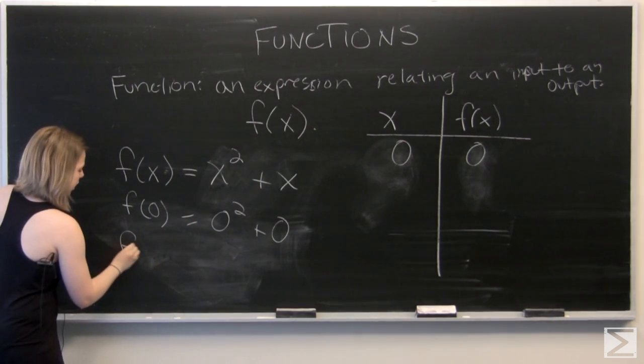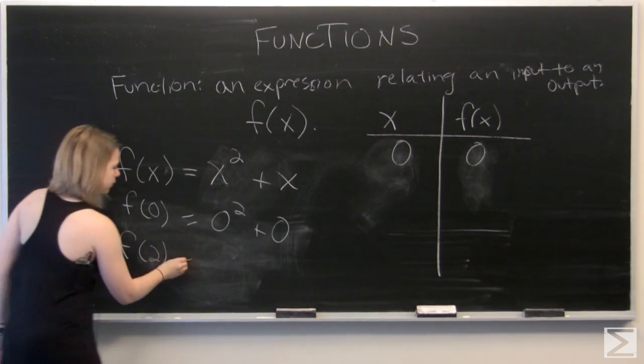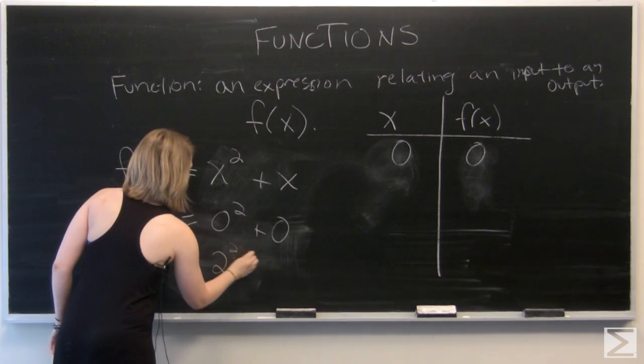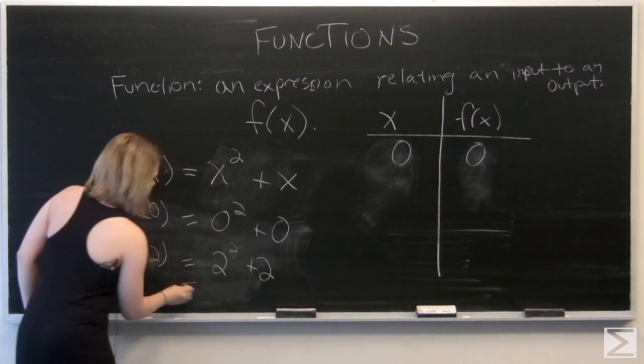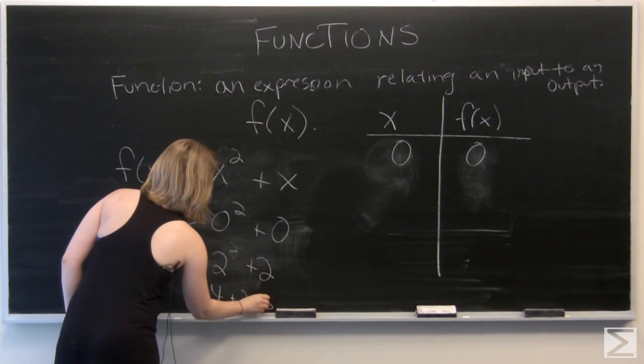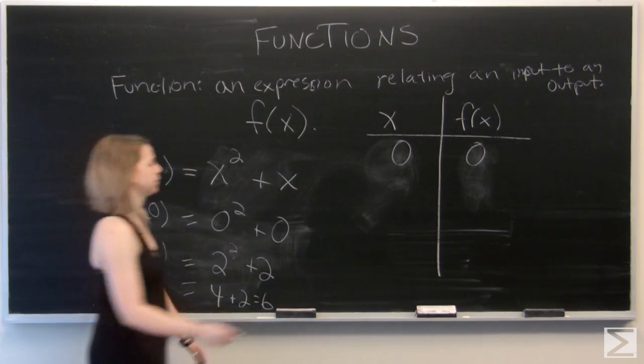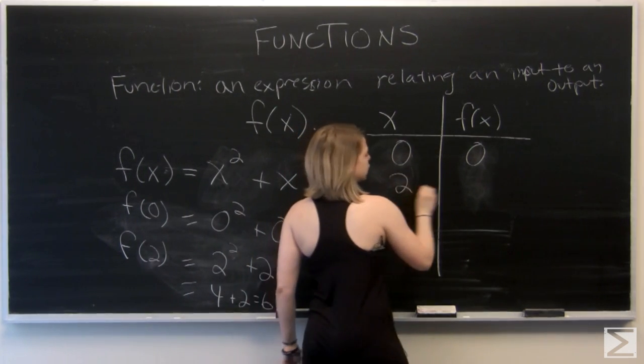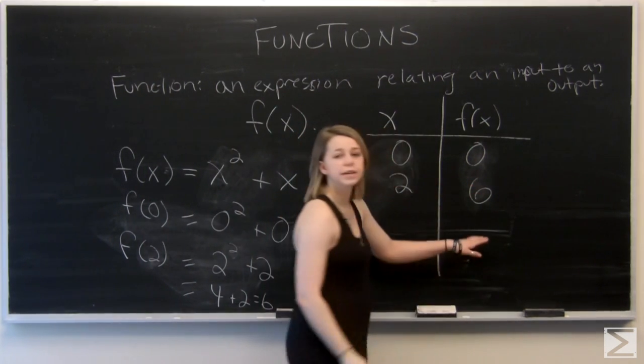And if we tried f of 2, we've got 2 squared plus 2, which is equal to 4 plus 2. And we'll find that our output is 6. So when our input is 2, our output is 6.